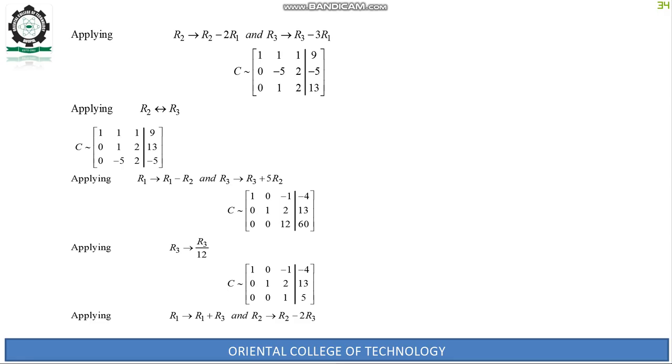C becomes: 1, 1, 1, 9; 0, -5, 2, -5; 0, 1, 2, 13.